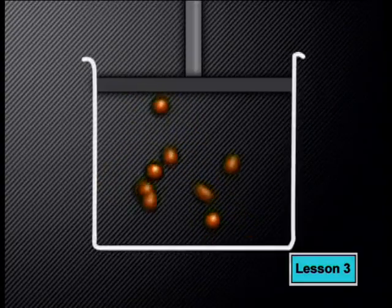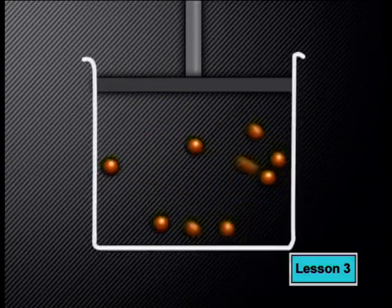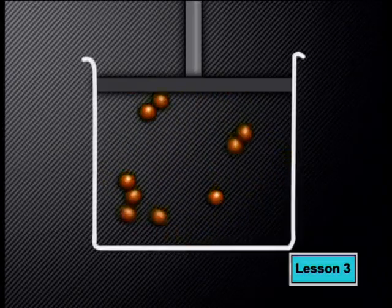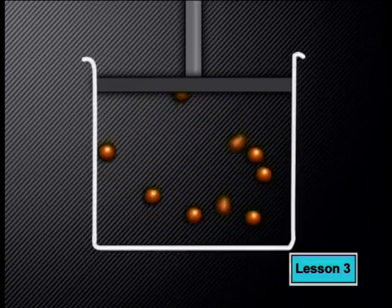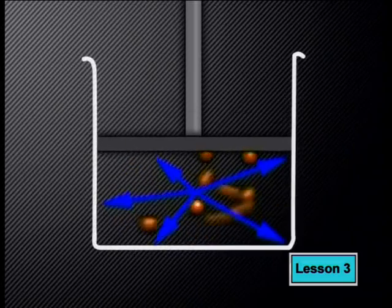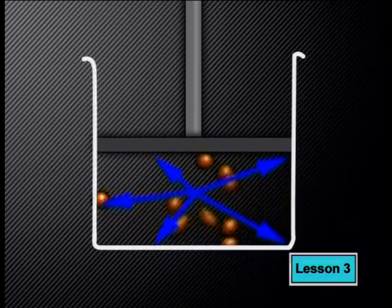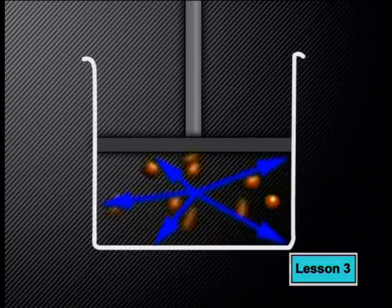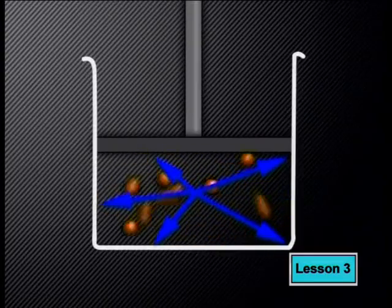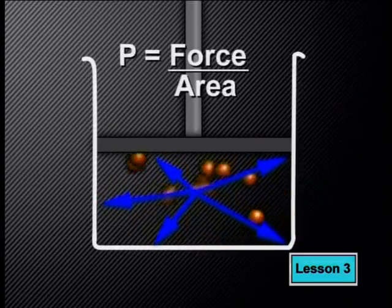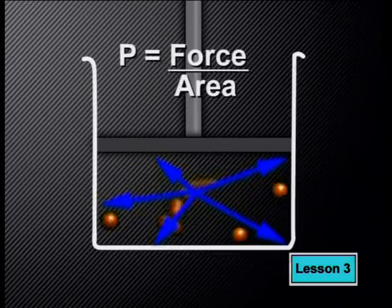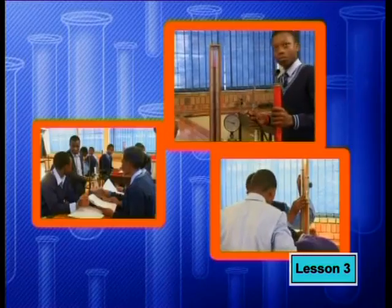Pressure is exerted by a trapped gas because the gas particles exert a force when they collide with the sides of the container that they are trapped in. When a gas is compressed, the surface area is decreased. The particles literally have fewer places to go. This means that they will collide with the sides of the container more often, increasing the force they exert. Since pressure is calculated as force per unit area, we can therefore expect an increase in pressure with a decrease in volume.